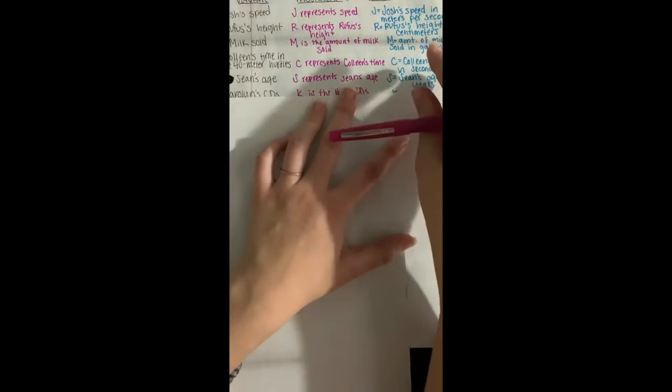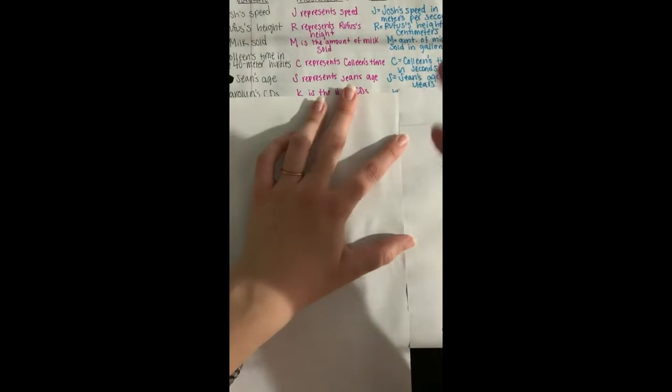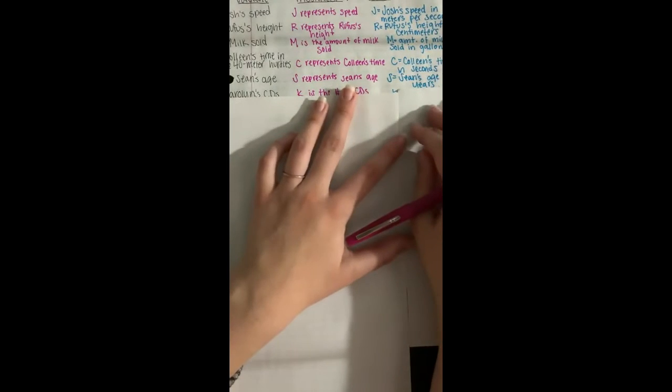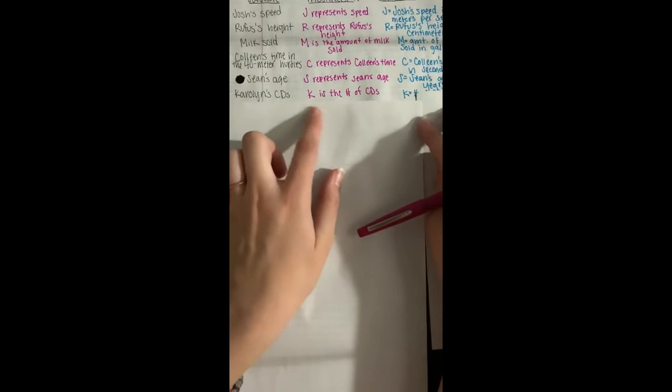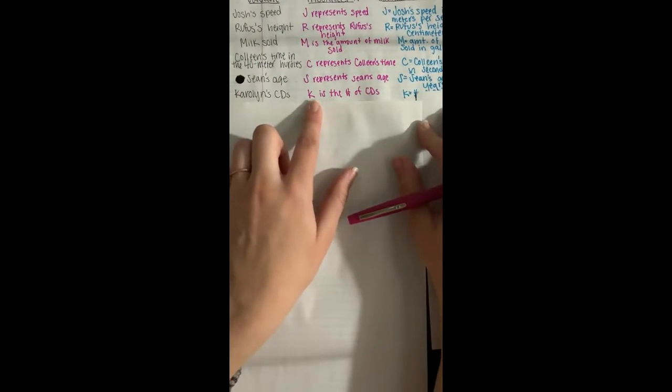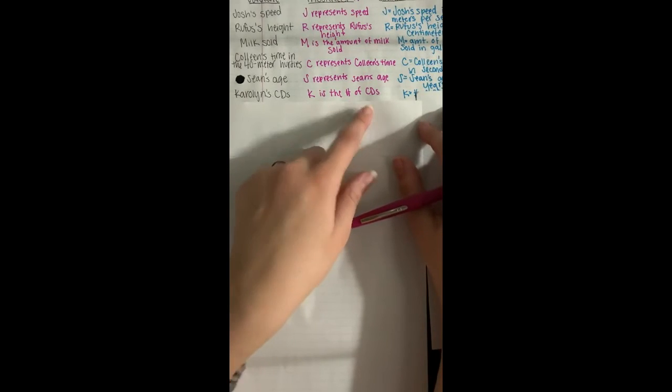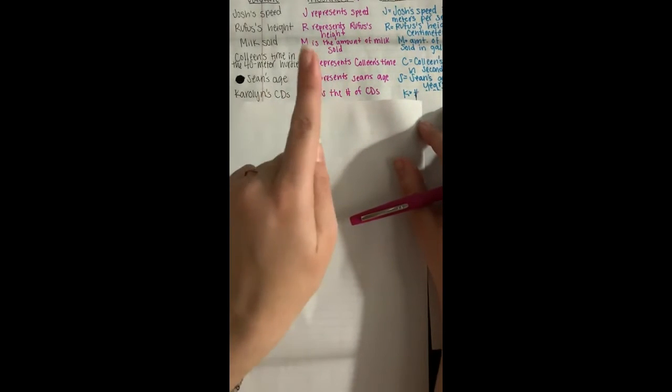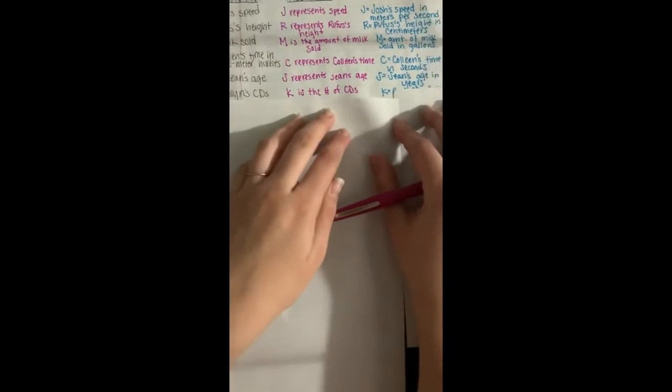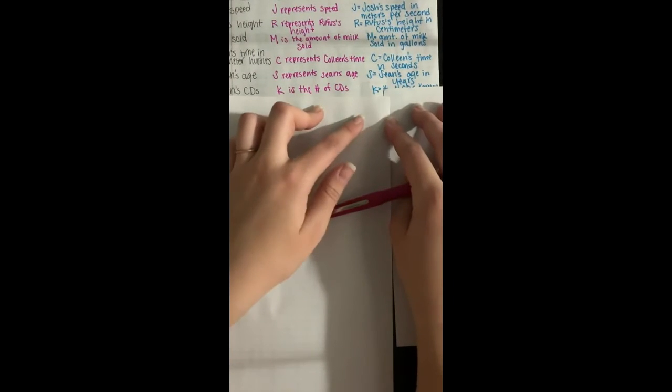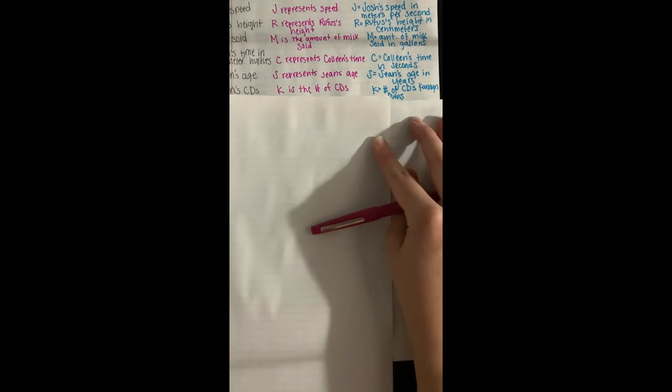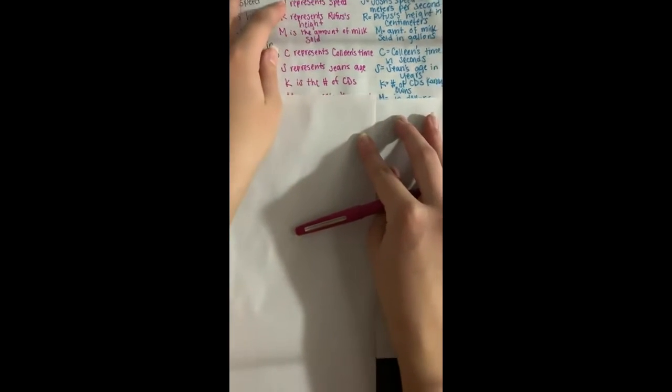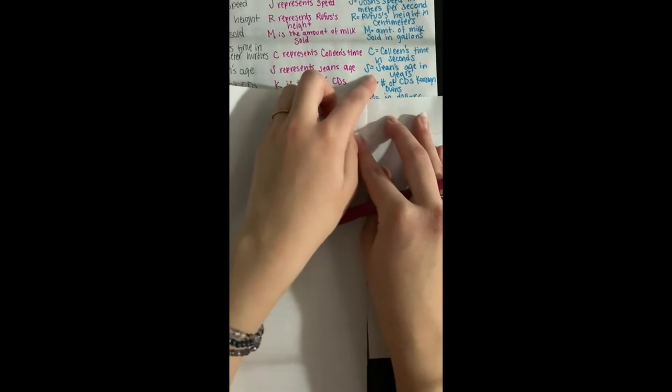So there are going to be some problems where it's not about a speed or something that you can measure. It might just be talking about objects like Carolyn's CDs. So K is the number of CDs might seem like it's enough, but actually we can still be more specific. Even though we're not going to measure that, we can say K is the number of CDs that Carolyn owns. It's not just any number of CDs, it's the number that she specifically has in her possession.